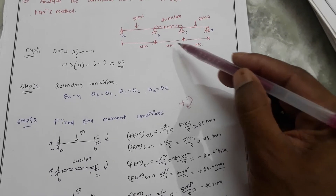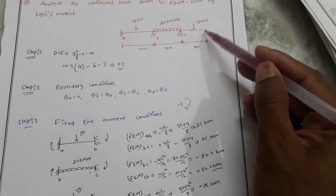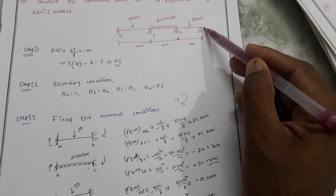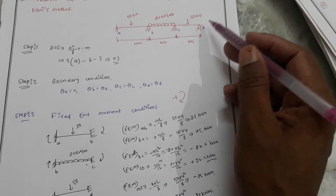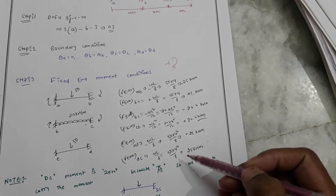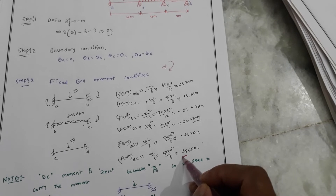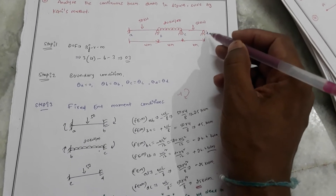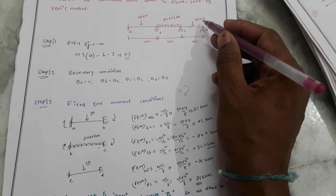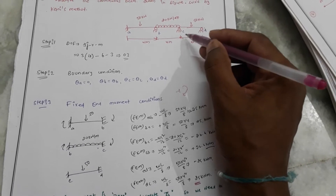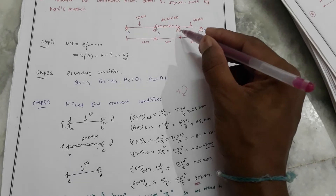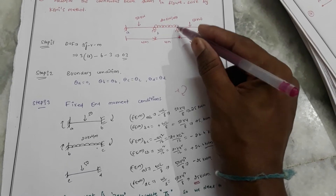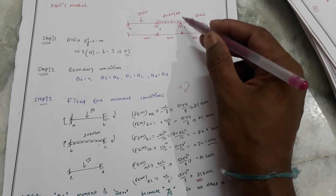Next, we need to balance the end moment and carry the end moment. We have a roller support at the end. In this case, the fixed end moment is 25. So the end moment is 25 — we need to balance it and carry it. This is a very important condition.